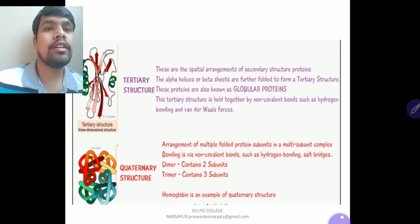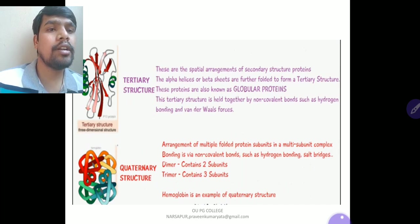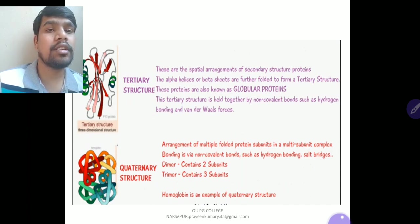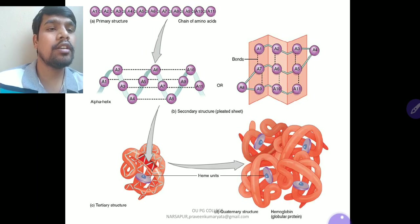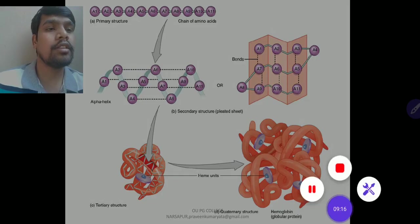The quaternary structure is the arrangement of multiple folded protein subunits in a multi-subunit complex, held together by non-covalent bonds such as hydrogen bonding and salt bridges. A dimer contains two subunits and a trimer contains three subunits. Hemoglobin is an example of a quaternary structure, progressing from primary to secondary to tertiary to quaternary structure.